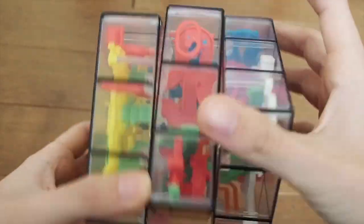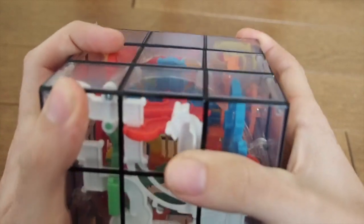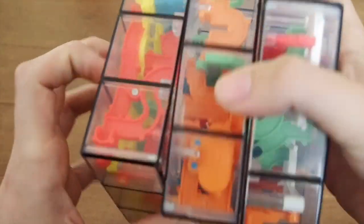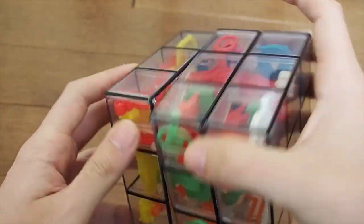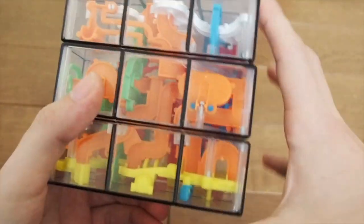This is a 3x3x1. In other words, it has three sections that turn. It does not turn in this direction. I cannot turn these, so it's just three turning three by three squares.